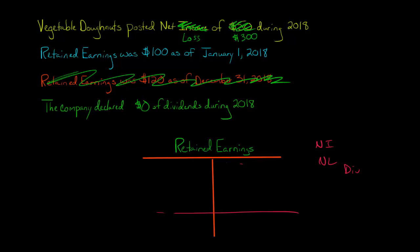So now here's the setup. I changed some things. Retained earnings was $100 at the beginning. So we've got $100. That's our beginning balance. There are no dividends, so we don't have to worry about debiting retained earnings for dividends.